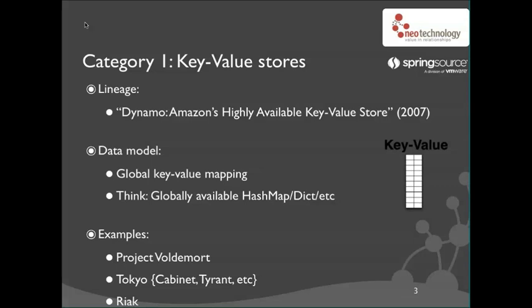A quick refresher on each of these four main categories. Key-value stores — here live projects like Voldemort or Riak — are all inspired by the Dynamo research paper out of Amazon, which outlined how Amazon managed to get to its amazing scale. They did so by augmenting their relational database with a specialized type of storage — in their case, a globally available distributed hash table. The data model of a key-value store is basically that of a Java.util.HashMap, but distributed and globally available. You have keys and values, you put keys and you get keys — that's it. Very strong scale-out characteristics, but a very simplistic data model.